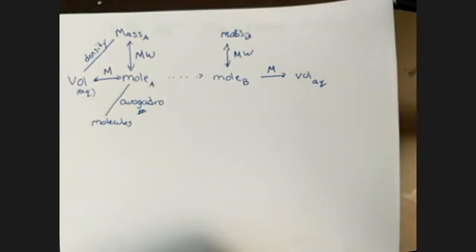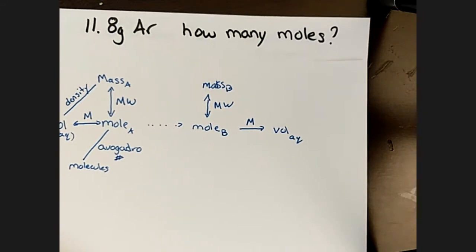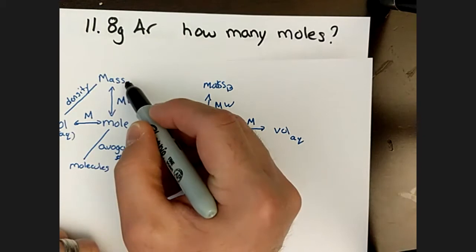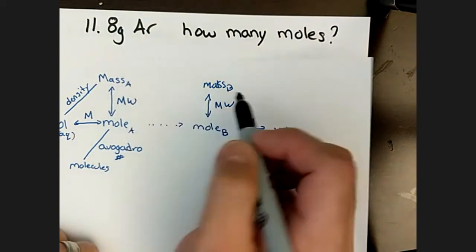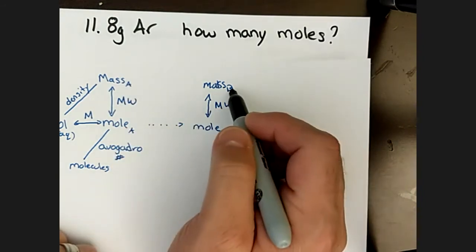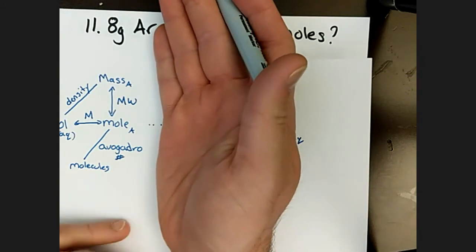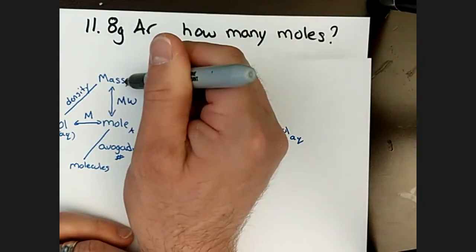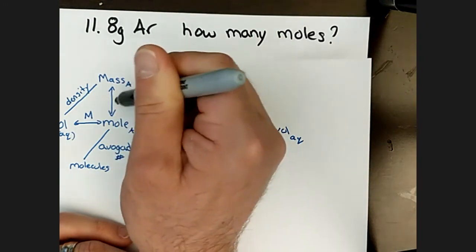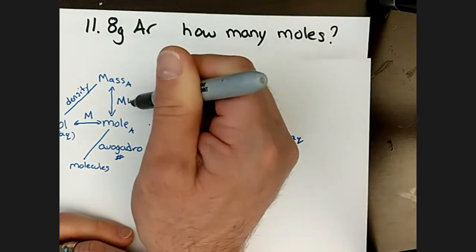Our first question: we have 11.8 grams of argon — how many moles is that? We're starting from mass and want to convert to moles of argon. The flowchart helps us identify what information we need, and in this case we need the molecular weight.